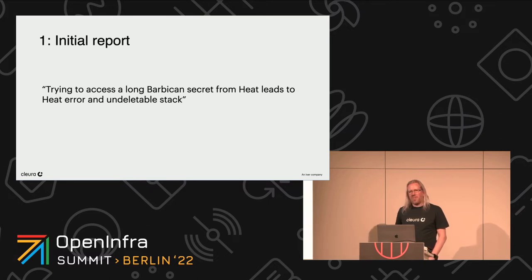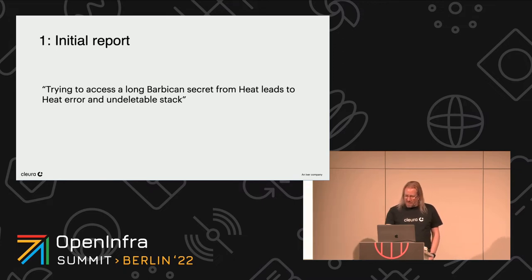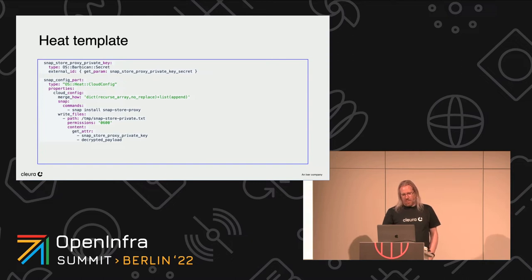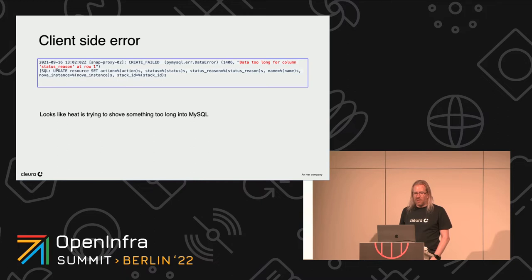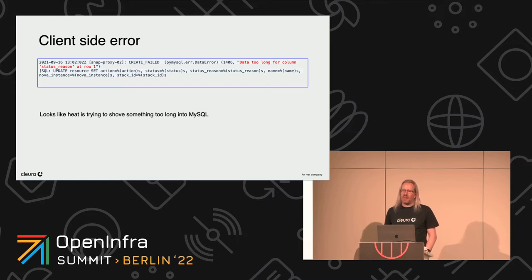The first issue: the initial report was that a user is trying to access a long Barbican secret from Heat, which leads to a Heat error and an undeletable stack. The user is using a Heat template, injecting a Barbican secret and writing it to a file. The client-side error the user gets from Heat is "data too long for column status reason" — so it looks like Heat is trying to shove something into MySQL that is too long.